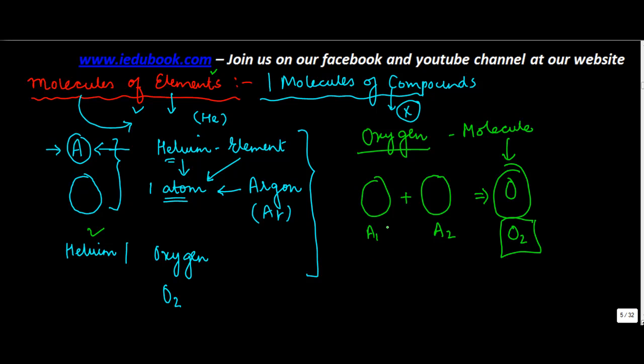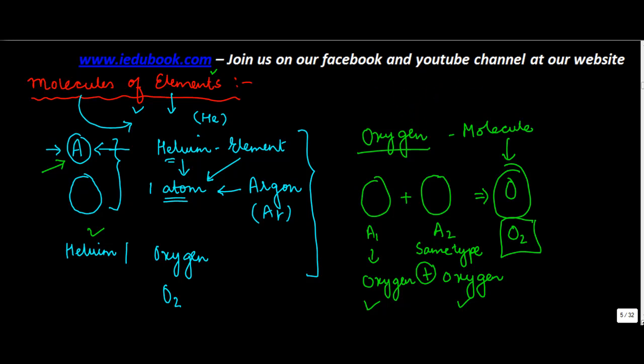But in case of elements, it is not that atom one is different from atom two. In both these cases the atom was of same type. So if this was oxygen, this was oxygen here. If it was formed only of one atom, there was no question of there being anything of two types.